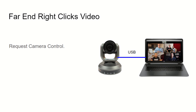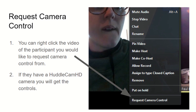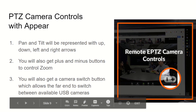All you need to do is have someone on the far end — once this feature is enabled — request camera control. When someone requests it, an approve or decline button comes up. Once you approve it, they get camera control. You right-click the video of someone on the far end and request camera control. If they have a HuddleCam HD camera on the other side, they will get those PTZ camera controls — pan, tilt, and zoom — in the bottom right-hand corner.